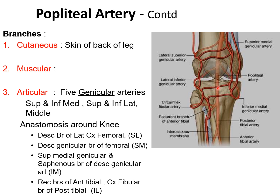Why is there a genicular anastomosis? During extreme flexion of the knee joint, the popliteal artery undergoes compression with sluggish blood flow. To compensate for such narrowing, alternate blood flow is maintained by collateral anastomosis around the knee joint. That is why we have the genicular anastomosis around the knee joint.